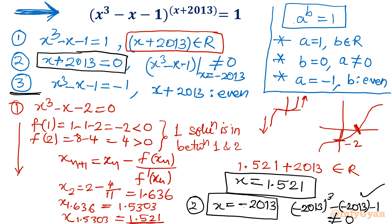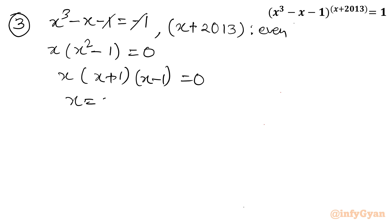Now come to the third case. Base should be minus 1. At the same time, power should be even, x plus 2013. Let's solve this first. I will cancel both. Take x common. x(x^2 - 1) equal to 0. x apply the difference of square formula. x(x+1)(x-1) equals 0. So x equals 0, 1, -1.